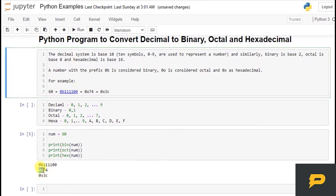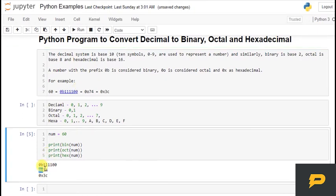And then I have 0o, which means this is the octal. And then 74, which is the representation of 60.